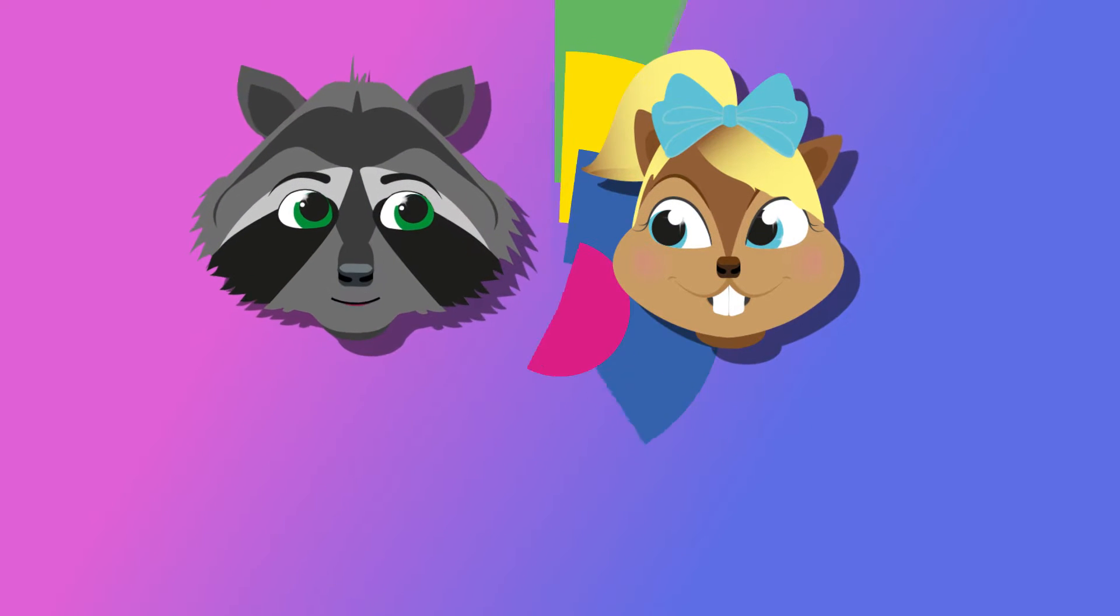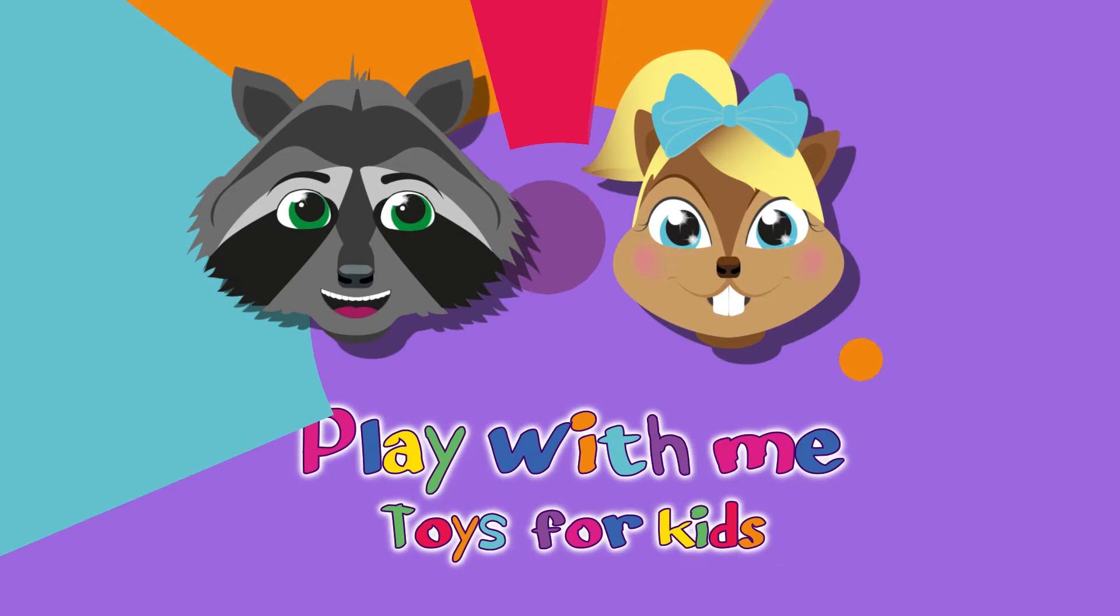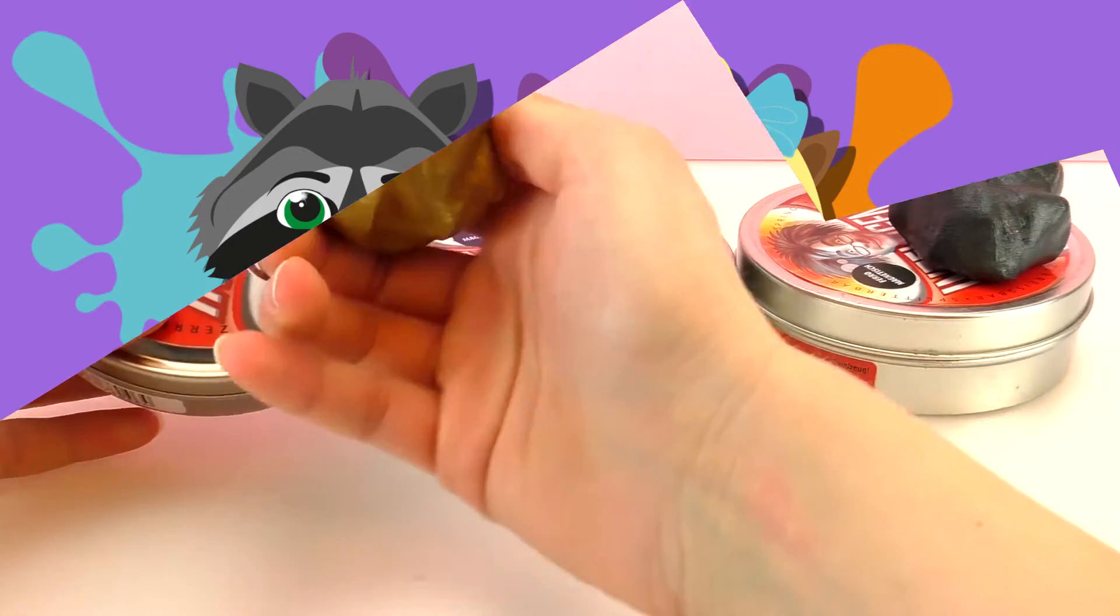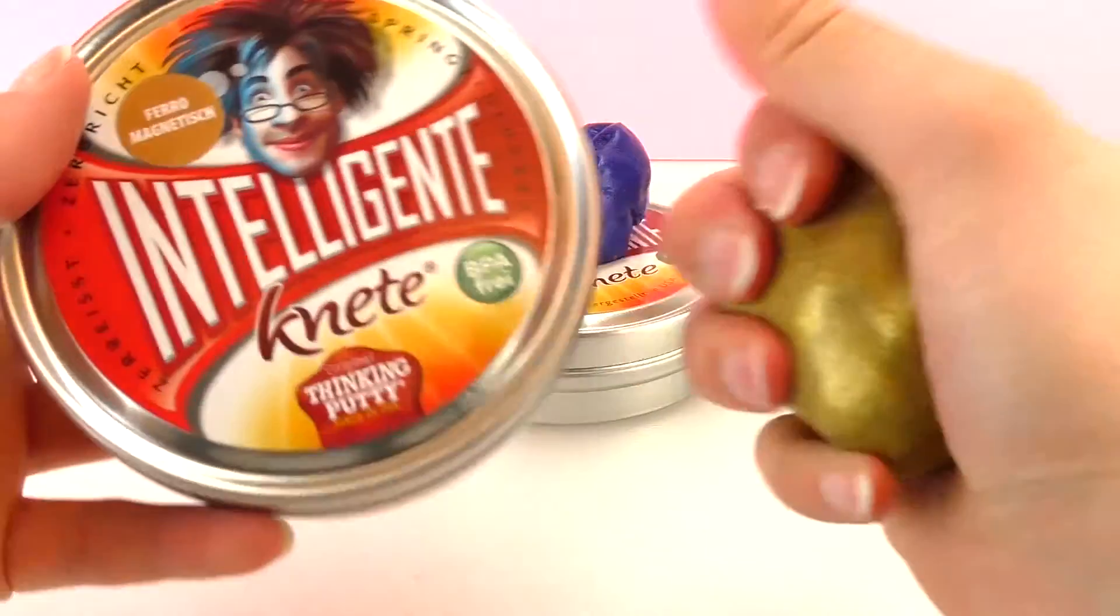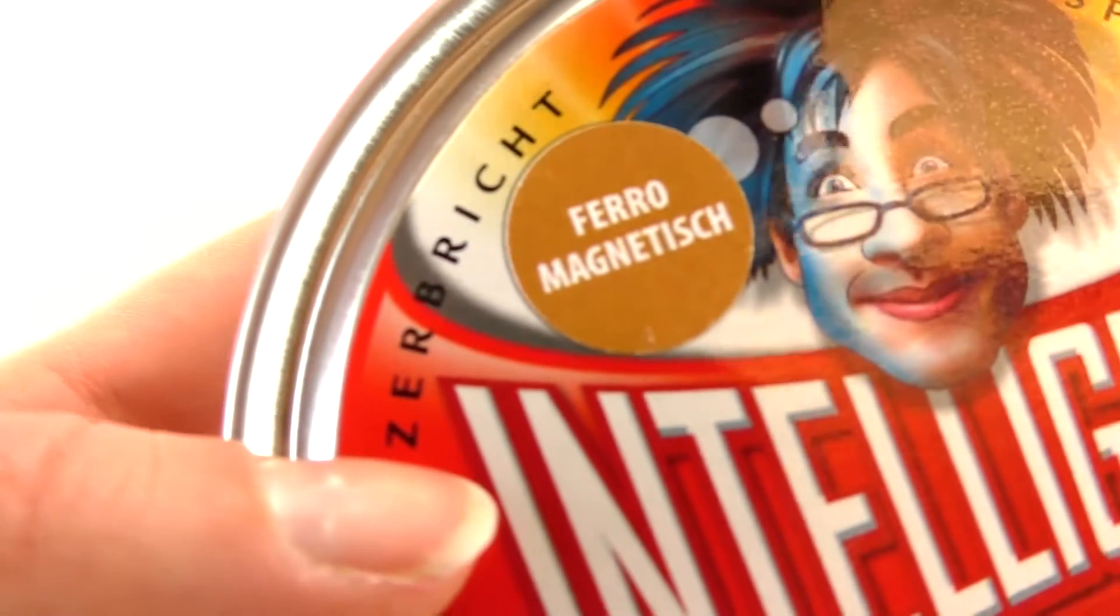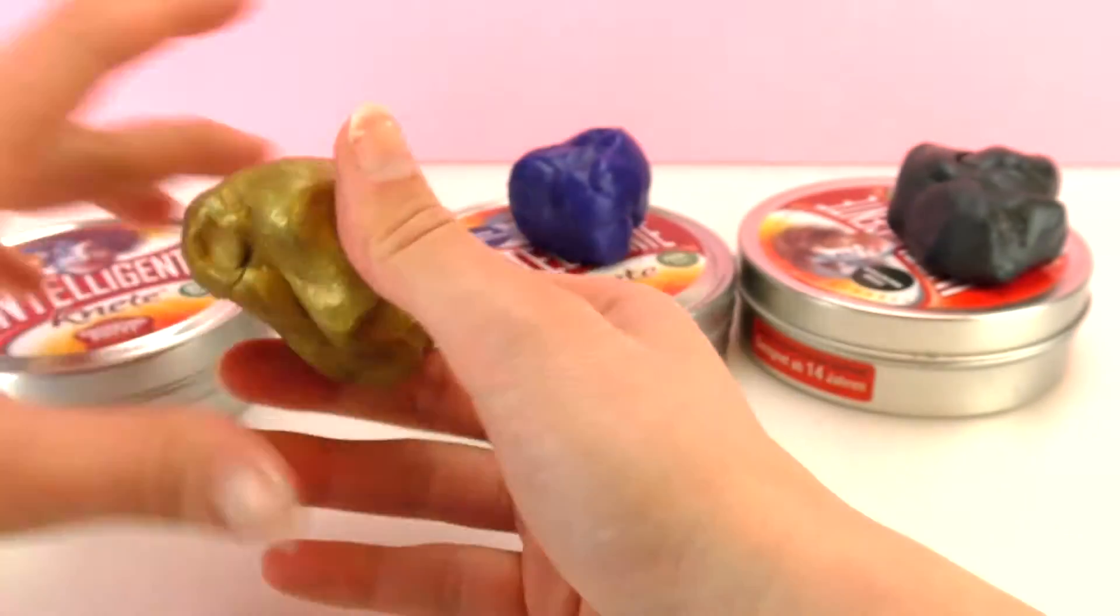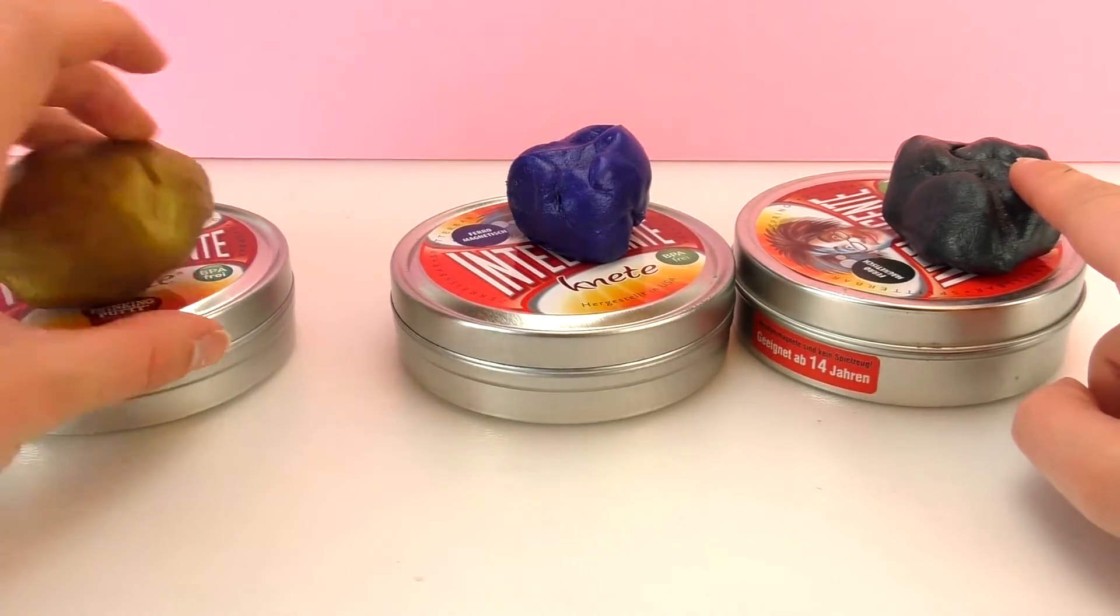Hi guys, welcome to Play With Me Toys for Kids. Today I have the intelligent clay that I got online. This is a really cool kind - it's ferromagnetic and comes in gold as well as blue and black.